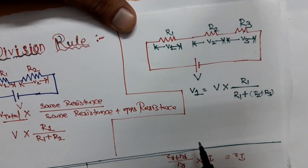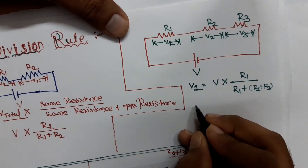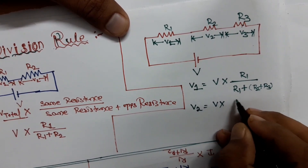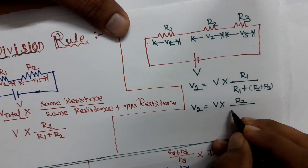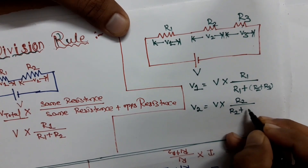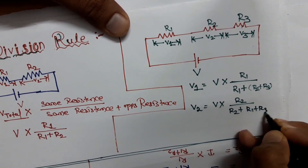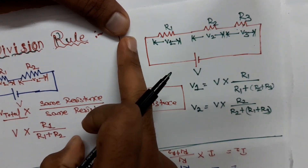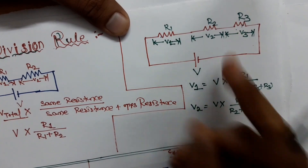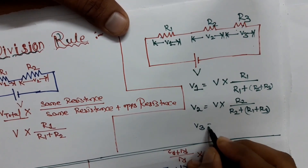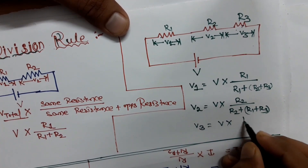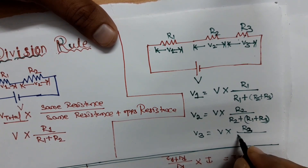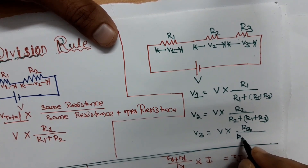Similarly, V2 equals V multiplied by R2, divided by R1 plus R2 plus R3 — where R1 and R3 are the other resistances in series. And V3 equals V multiplied by R3, divided by R1 plus R2 plus R3.